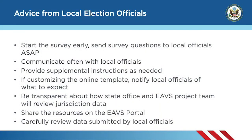While the EAVS project team was building the online template, we completed testing with local officials from six states. Those local officials gave us great insight on how state officials can support their local jurisdictions as they complete EAVS. One of the most common pieces of feedback was to notify local officials about EAVS as early as you can and share the survey questions with them so they know what data they'll need to provide. If you have not yet notified your local jurisdiction officials, do that as soon as possible. We also recommend sending them the PDF of the EAVS survey questions available on the EAVS portal. Communicate often with local officials, send reminders of upcoming deadlines, and use the progress report information from the EAVS portal to identify which jurisdictions might need extra assistance.